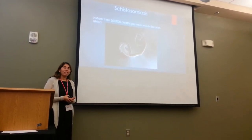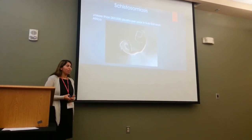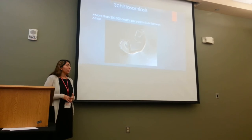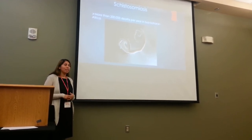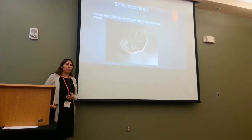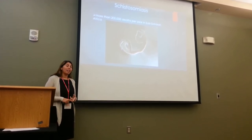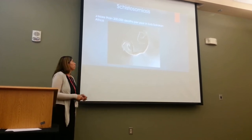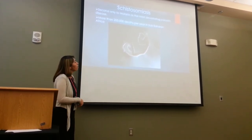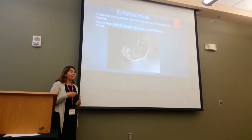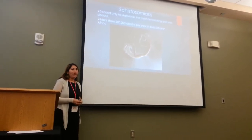Some of the symptoms of chronic schistosomiasis include enlarged liver, blood in the urine and feces, increased risk of bladder cancer, and in rare instances, eggs from the schistosome can actually be found in the brain and in the spinal column, which can cause paralysis, seizures, and inflammation of the spinal cord. According to the CDC, schistosomiasis is second only to malaria as the most devastating parasitic disease.